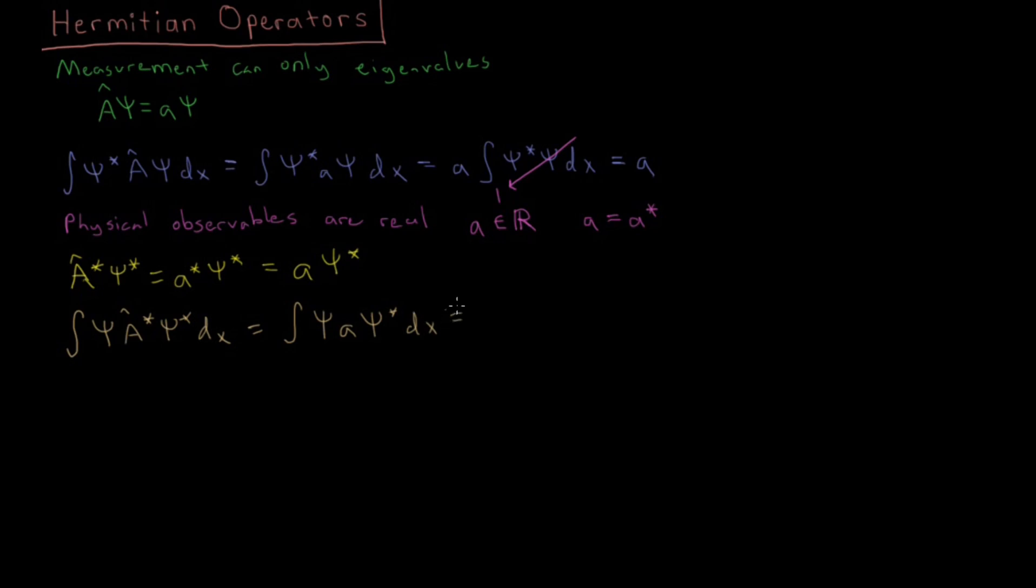Then similarly, we can pull out A in front of the integral because it is just a constant. The eigenvalue is a constant value, it does not vary with X. Psi-psi-star. And once again, psi-psi-star, the integral over the entire range of X is going to give us 1. So we just get the value A back.